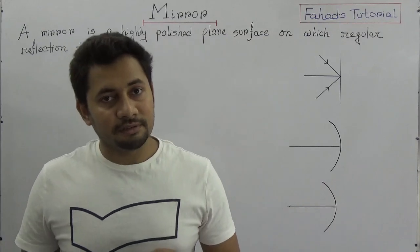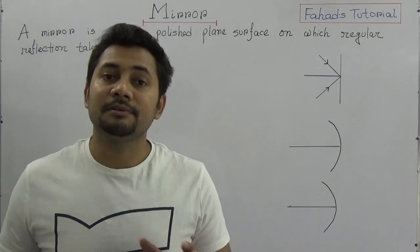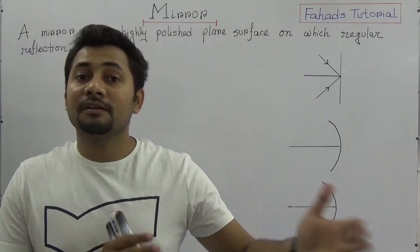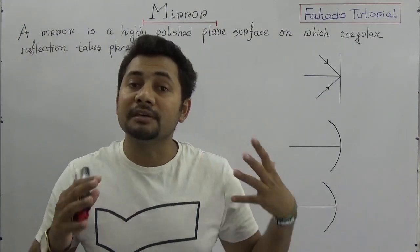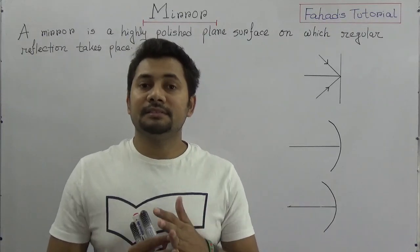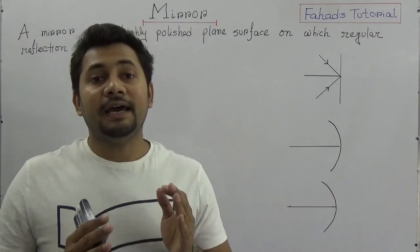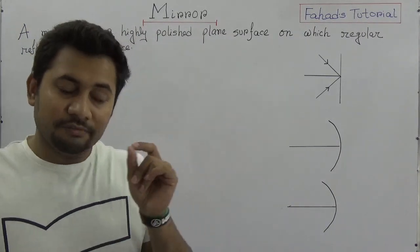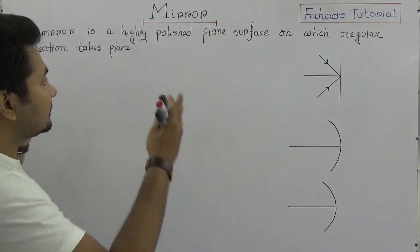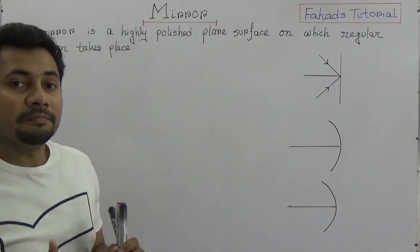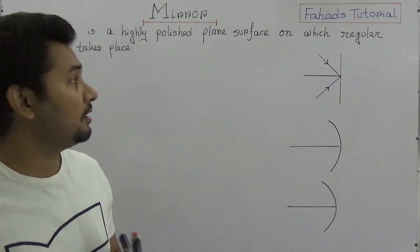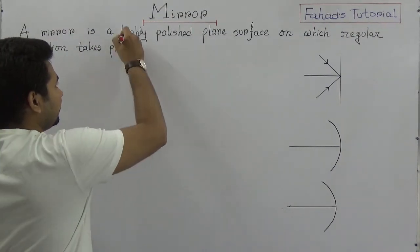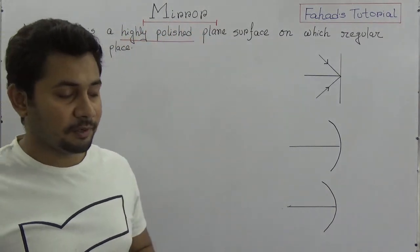As we are studying about reflections, we need to know about mirrors first. That's because in the next videos of this chapter, it's discussed about how an image is formed and there are mathematical problems that we need to solve. Before that, we need to know what a mirror is. A mirror is a highly polished plain surface.